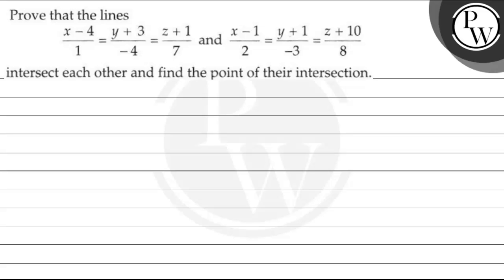Hello. Let's read this question: prove that the lines (x−4)/1 = (y+3)/(−4) = (z+1)/7 and (x−1)/2 = (y+1)/(−3) = (z+10)/8 intersect each other, and find the point of intersection.